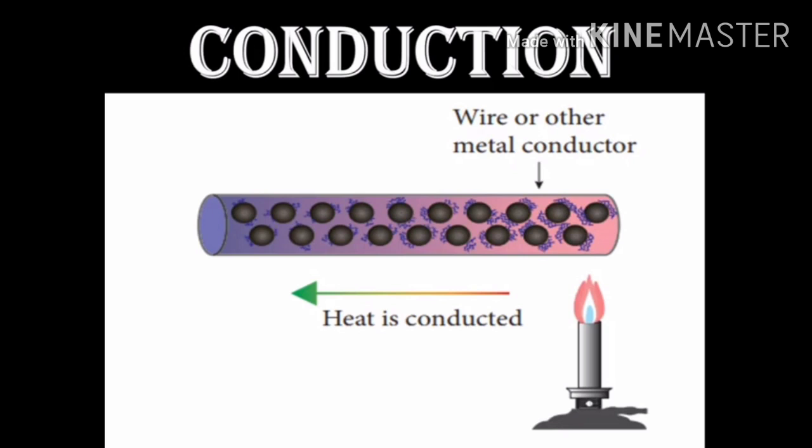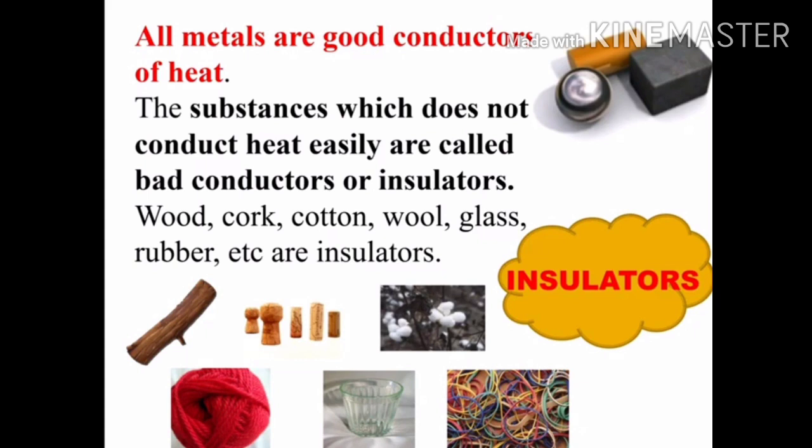This is a good example for conduction. All metals are good conductors of heat. But substances which do not conduct heat easily are called bad conductors or insulators. Some examples of insulators are wood, cotton, wool, glass, and rubber.